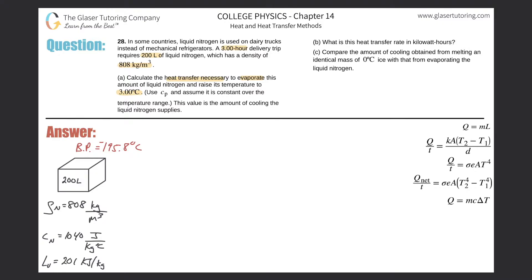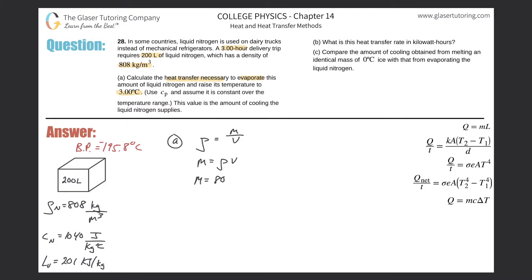We have a volume of liquid nitrogen of 200 liters, and they gave us the density. Since heat transfer formulas involve mass, we need to find the mass first. Density equals mass divided by volume, so mass equals density times volume. The density of liquid nitrogen is 808 kg/m³.